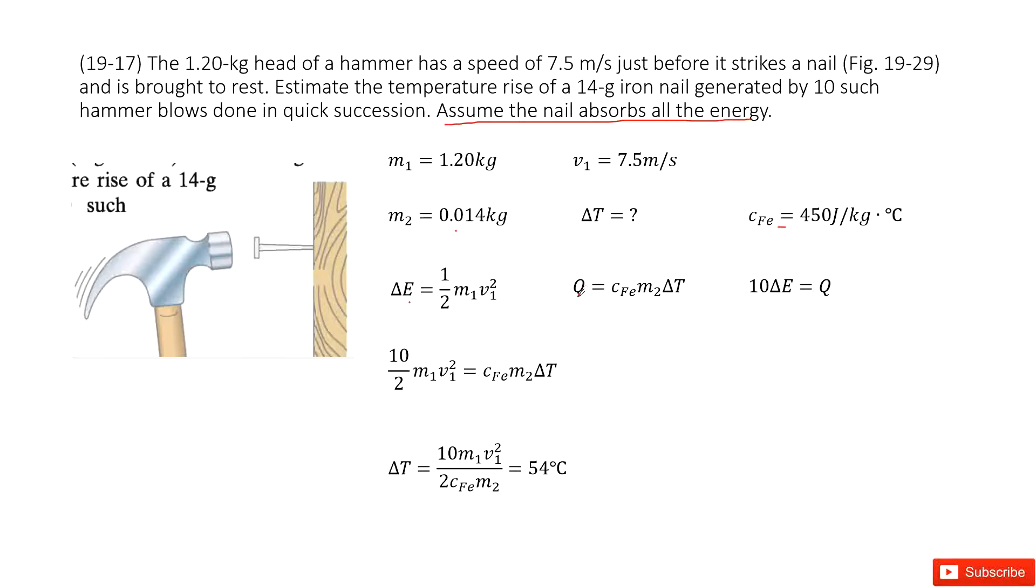So in this case, Q is cₚm₂ΔT. As it tells us 10 such strikes, 10 such strikes equals to the heat. So 10 times ΔE equal to Q, right?